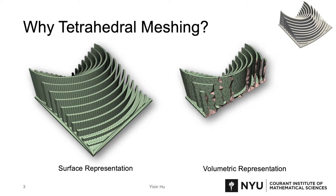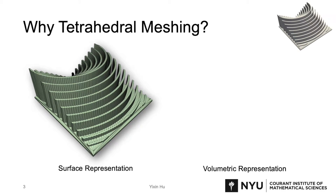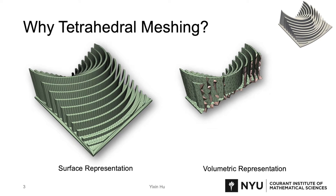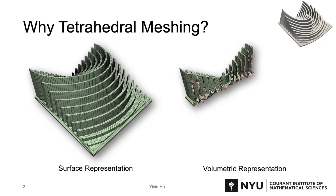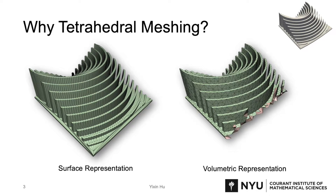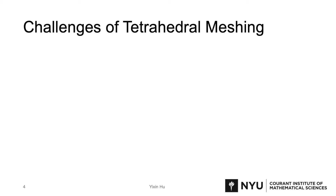It takes as input the surface of an object and uses tetrahedra to fill in the interior space of the surface and output a tetrahedral mesh with the input surface preserved. However, tetrahedral meshing is not an easy task. It has been a hard problem for a long time.